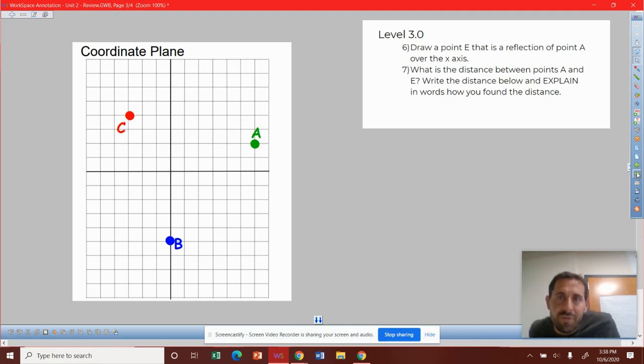Stepping it up again. Now we're at level three. So it says draw a point E that is a reflection of point A over the x-axis.